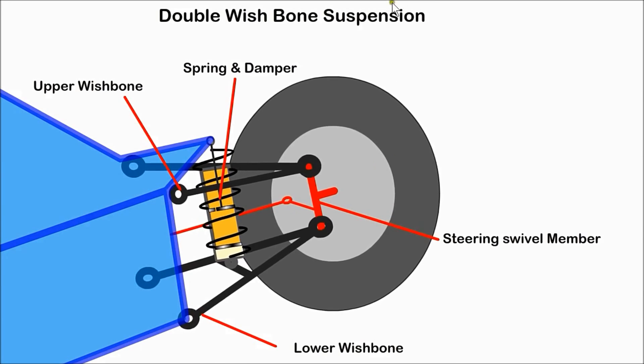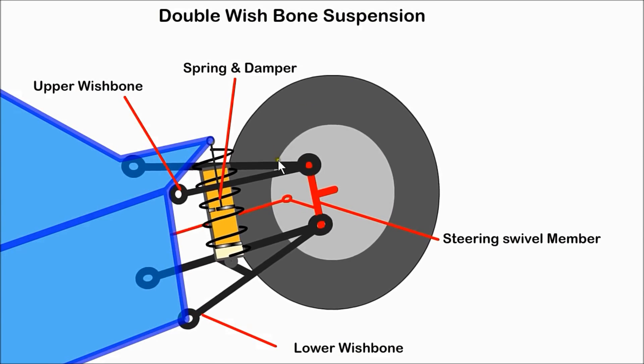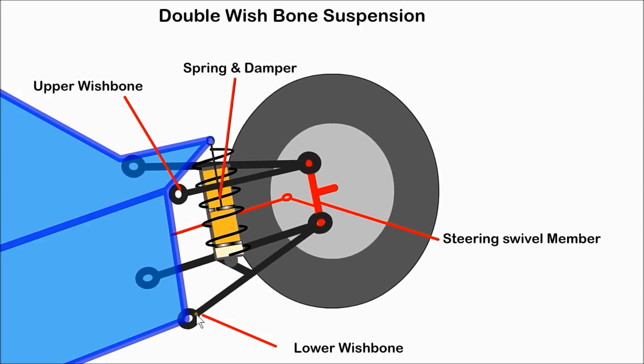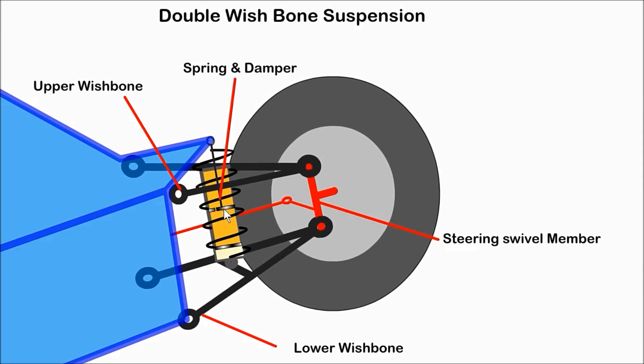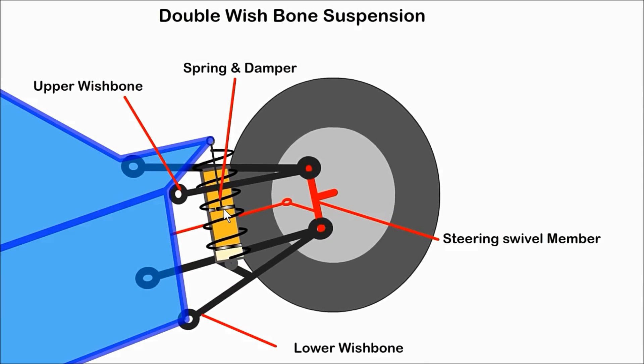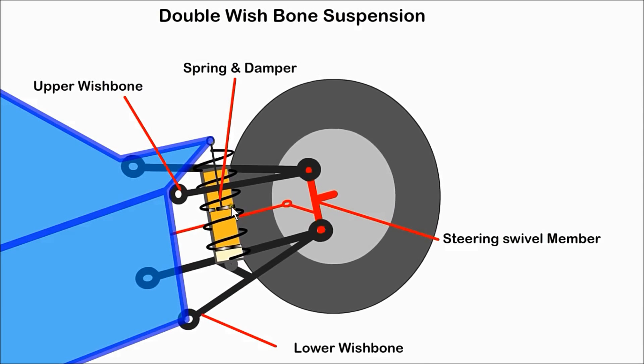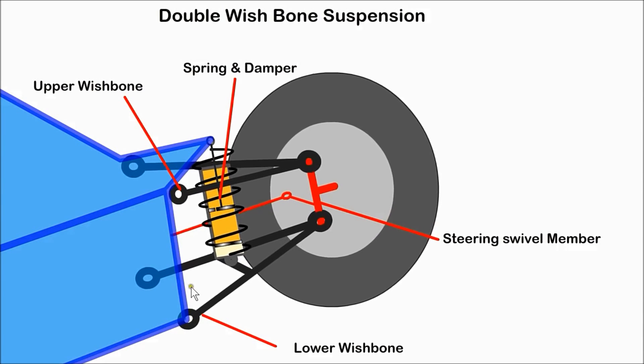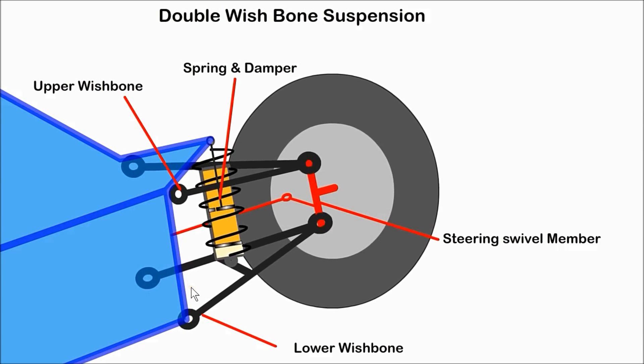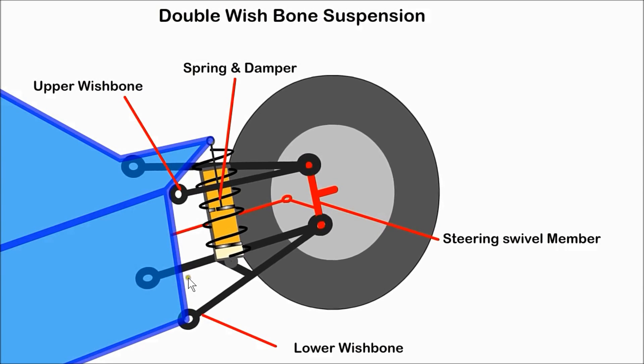A double wishbone suspension has two wishbone shaped links attached to the car at the wide end and the narrow end is connected to swivel members, which have the stub axle and wheel. The spring and damper are located between the lower member and the car structure. In most cars, the wishbones are not of equal length or parallel. This system is expensive to manufacture but gives good stability to the wheel. They are often used on racing cars.